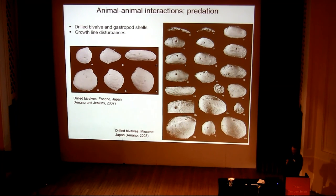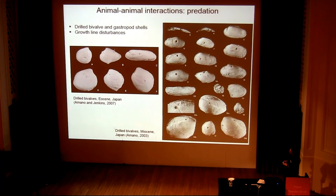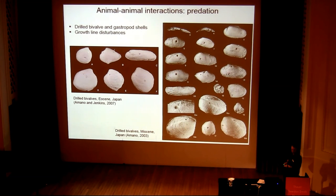Predation is very common in these ancient seep communities, including growth line disturbances on bivalve and gastropod shells showing non-lethal predation. Many Cenozoic examples show drill holes — some complete, some incomplete — found on pretty much all of the mollusks in these communities. Here's an Eocene example from Japan with drill holes in vesicomyid bivalves, and slightly younger ones in thyasirids, lucinids, solemyids, and vesicomyids. In this case we also have the organisms probably responsible — fossil naticid gastropods.